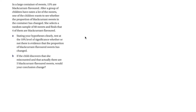Now we have a wordy question. In a large container of sweets, 15% are blackcurrant flavoured. After children have eaten a lot of the sweets, one child wants to see whether the proportion of blackcurrant sweets has changed. She selects a random sample of 60 sweets and finds four are blackcurrant flavoured. We state H0: p = 0.15 and H1: p ≠ 0.15 — it's a two-tailed test since it just says the proportion has changed. Here p is the proportion of blackcurrant sweets.